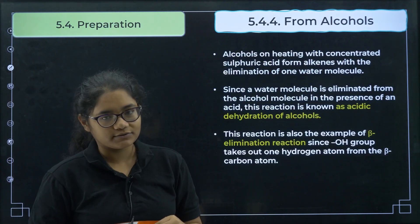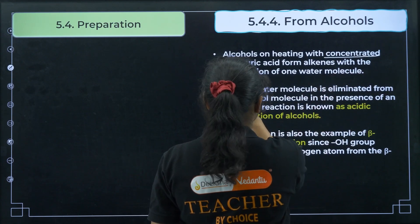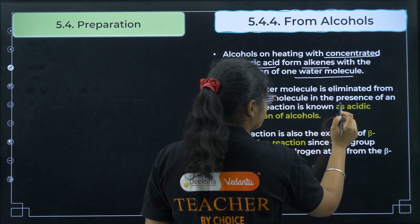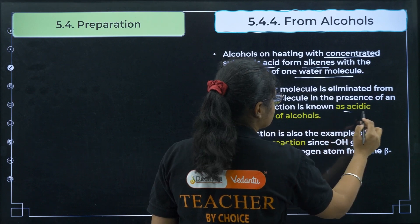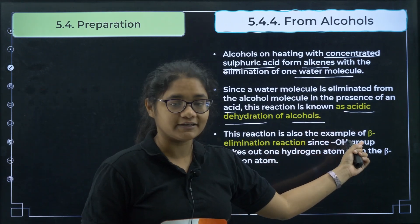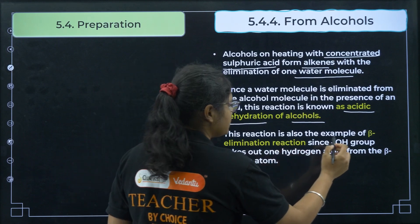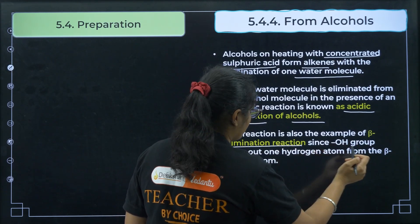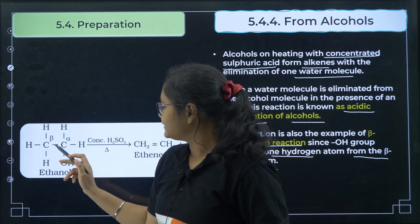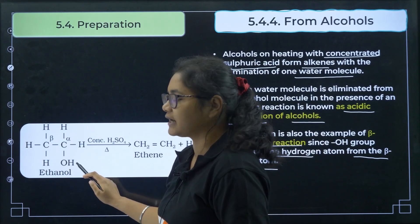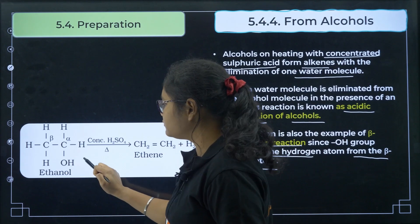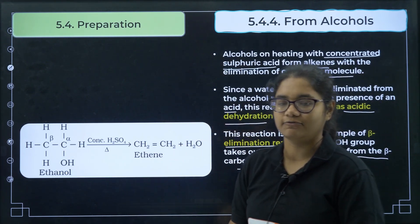Fourth method: from alcohols. Alcohols, on heating with concentrated sulfuric acid, form alkenes with elimination of one water molecule. This is known as acid dehydration of alcohols — removal of water in the presence of acid. It is also a beta-elimination reaction, since the OH group takes out one hydrogen from the beta carbon. For example, ethanol with conc. H2SO4 and heat removes H and OH to give ethene.